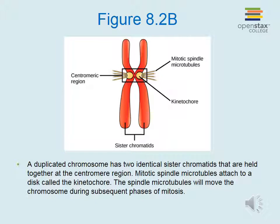A duplicated chromosome has two identical sister chromatids that are held together at the centromere region. Mitotic spindle microtubules attach to a disk called the kinetochore, and they will move the chromosome during subsequent phases of mitosis.